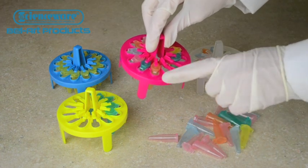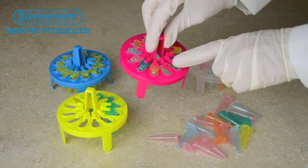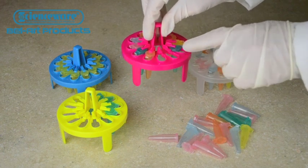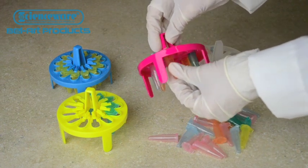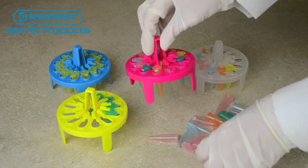PrepSafe Microcentrifuge Tube Mini Floating Racks have unique immobilizing tabs that protect your samples from loss and contamination by locking your tubes in place and keeping caps closed.